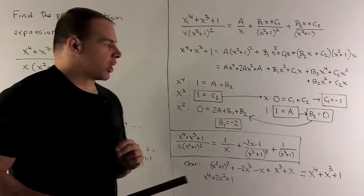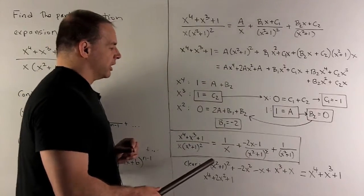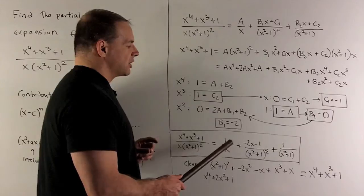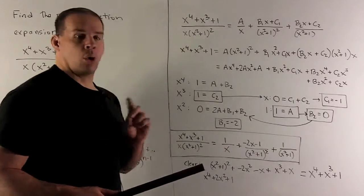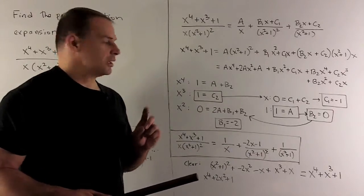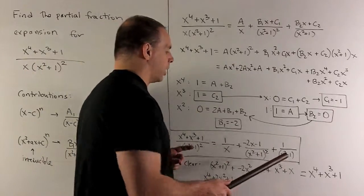So that's going to give us our answer. Our partial fraction expansion is 1 over x plus minus 2x minus 1 over x squared plus 1 squared plus 1 over x squared plus 1.